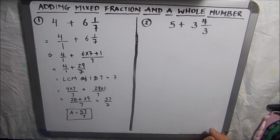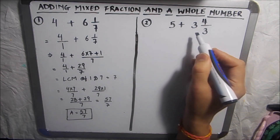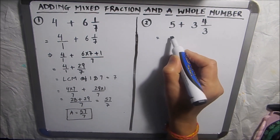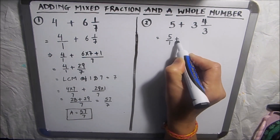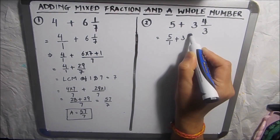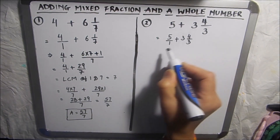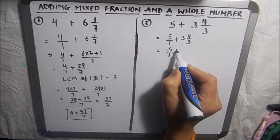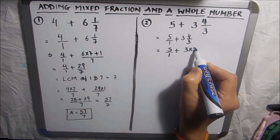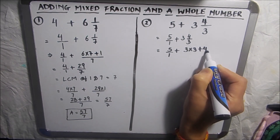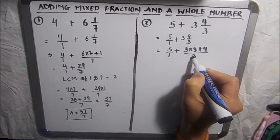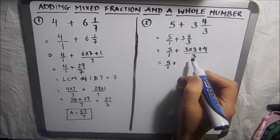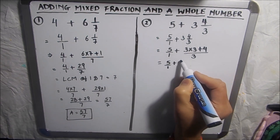Now let's take one more example: 5 plus 3 and 4 over 3. Here also, we will write 5 with a denominator of 1, giving us 5 over 1. Then we will convert this mixed fraction into an improper fraction: 3 times 3 plus 4 over 3, which is 9 plus 4 equals 13 over 3.